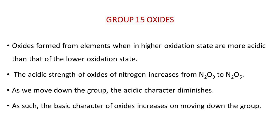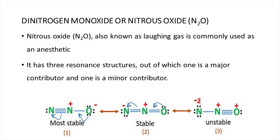Now we can discuss the structure of different oxides in detail. Firstly, dinitrogen monoxide, also known as nitrous oxide, with the formula N2O.